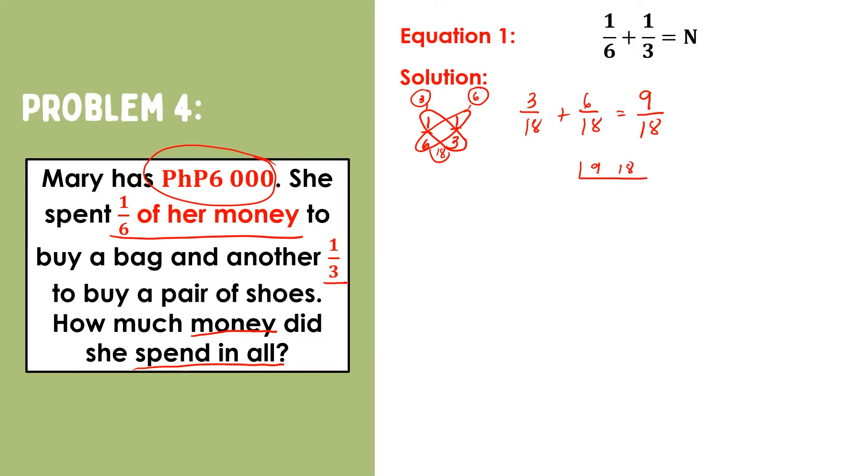Nine-eighteenths can still be simplified. Using the continuous division method, we may start dividing these two numbers by three. Nine divided by three is three, and eighteen divided by three is six. Three and six can still be divided by three. Three divided by three is one, and six divided by three is two. That means, one-half of her money was spent.